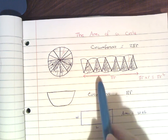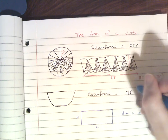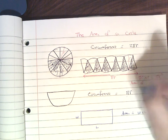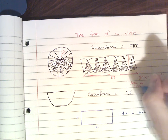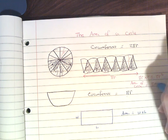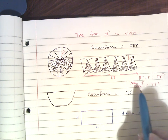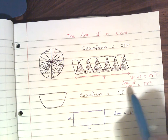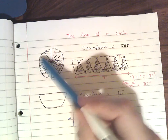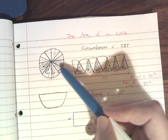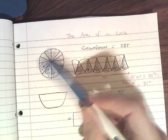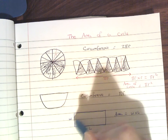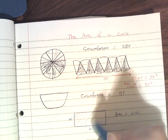So therefore what we can say is that the area of a circle is equal to pi r squared. That's the formula you need to know when you're trying to get the area of a circle. The area is the space that the circle will cover — it's this space here.